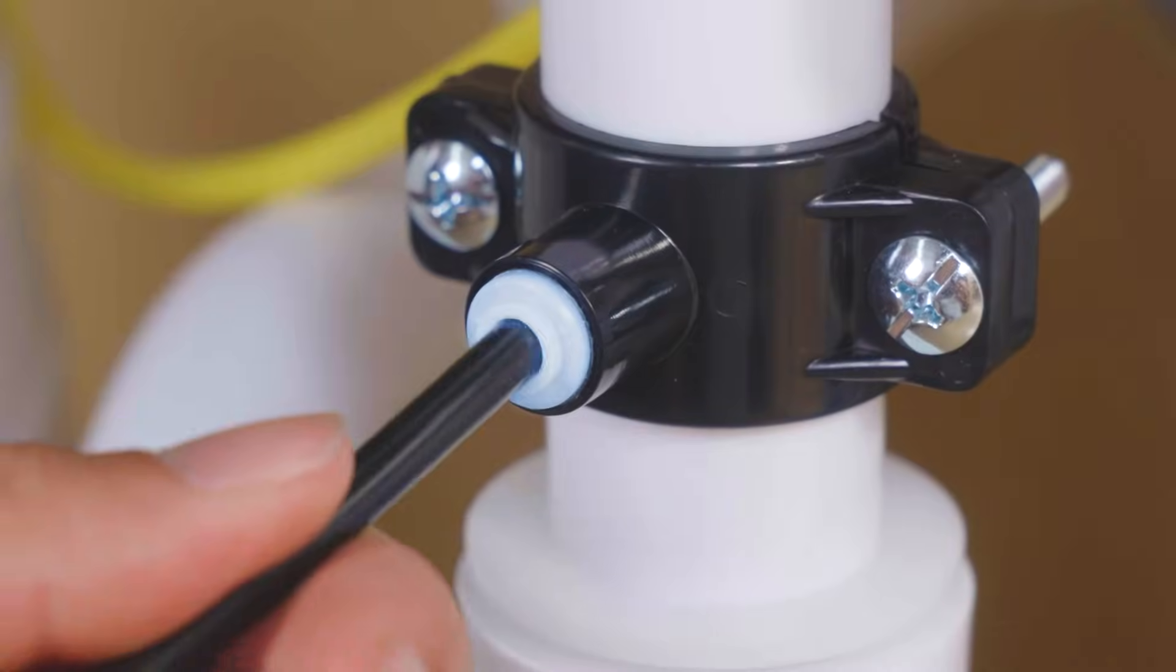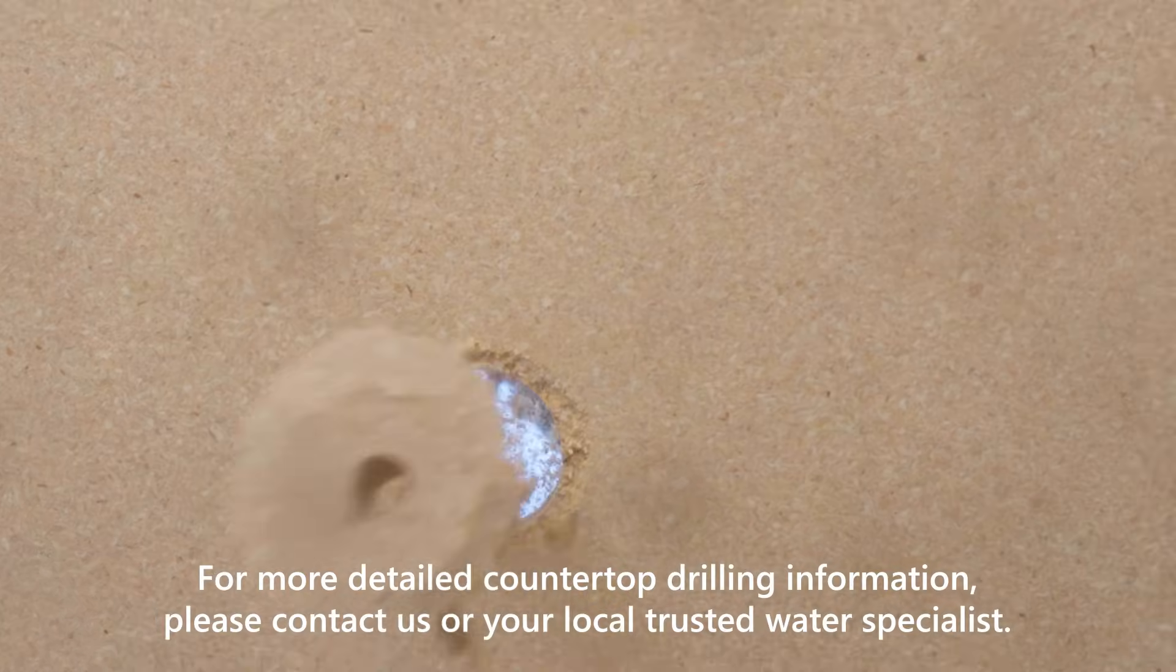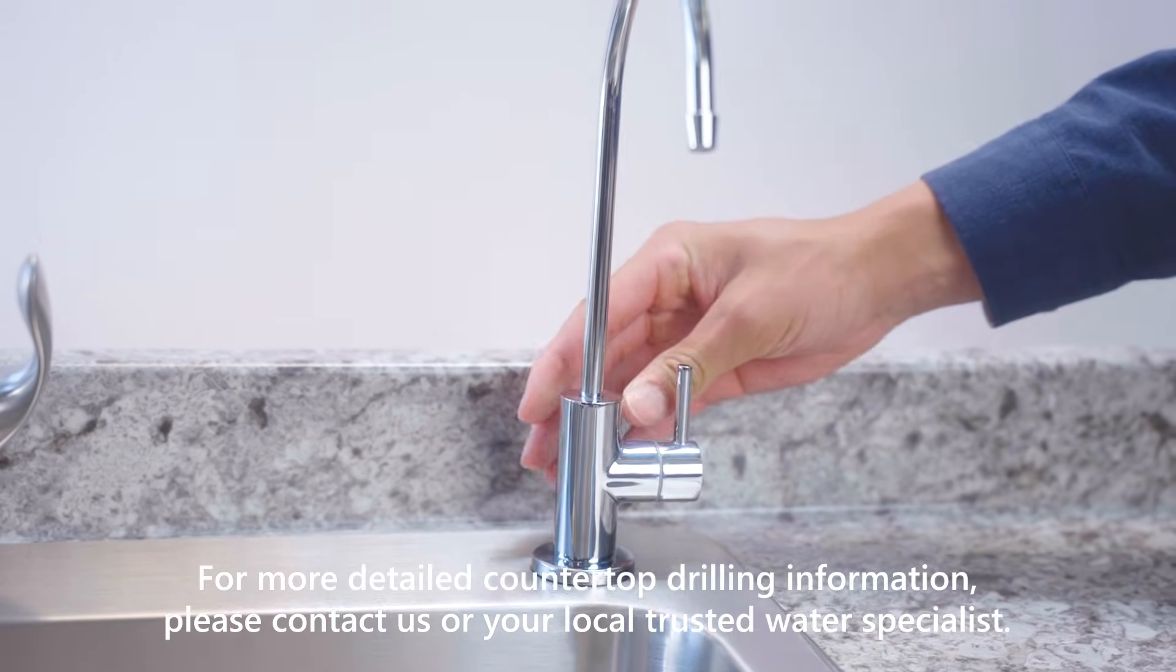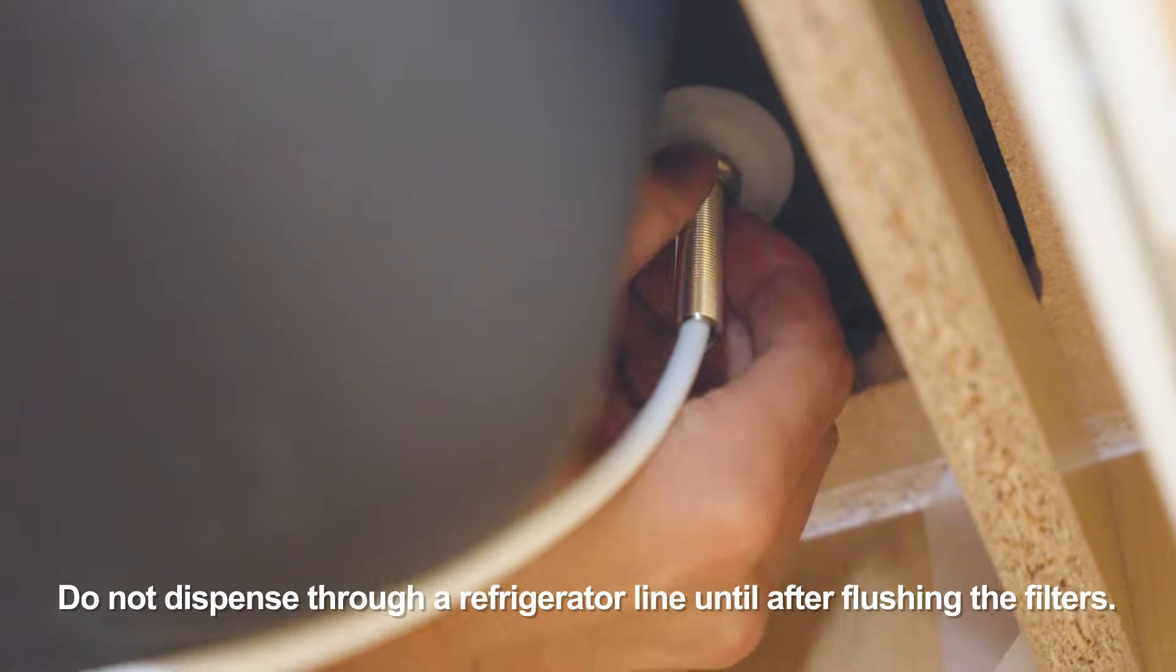Install the RO faucet in a half-inch sinkhole. Then connect the clear tubing to the faucet base.